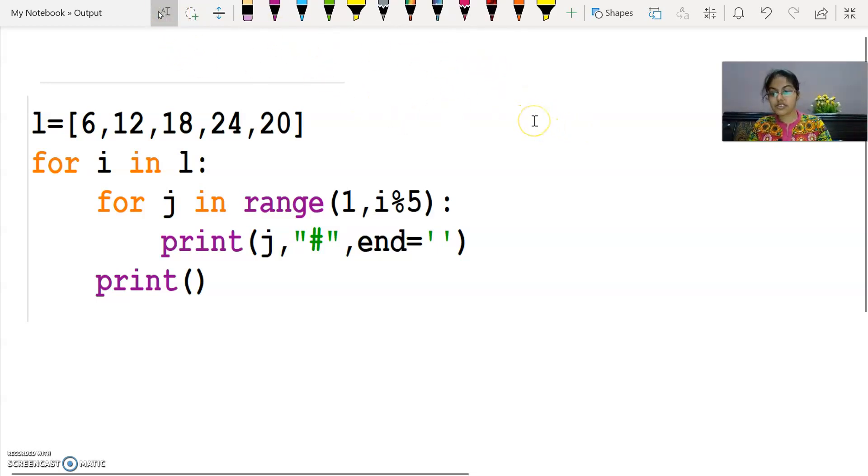So we will start. First, the list will take value 6. Okay, first for i in l, so what value will come in i? 6. Now where will my j's loop run? Starting value is fixed, and what is fixed? 1.